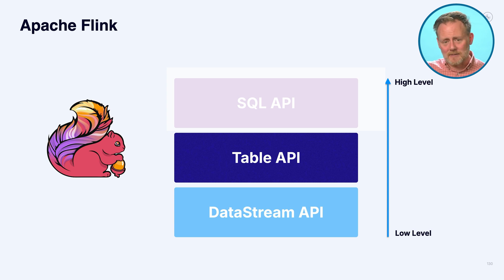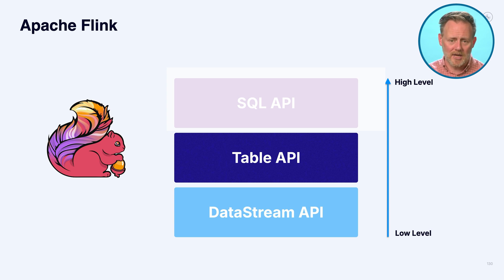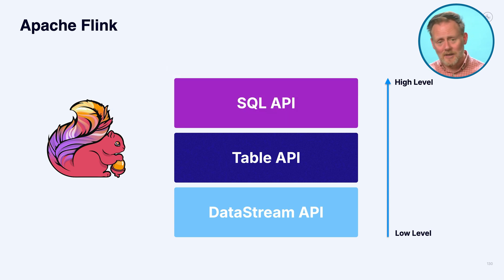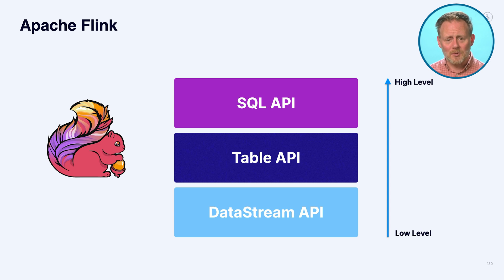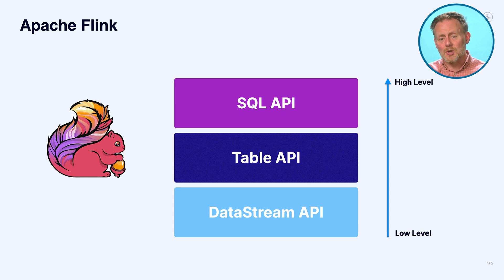The Table API is growing and becoming more powerful over time — a great way to go for new designs if you want to write stream processors in Java or Python. If you want to write them in SQL, Flink SQL gets the job done. You can write SQL statements that are parsed and turned into jobs running on the Flink cluster. Who wouldn't want it? One framework to do all the things.